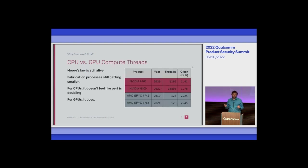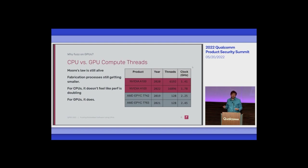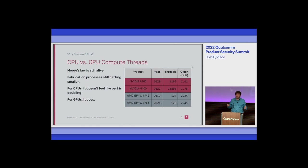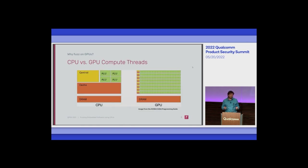Moore's Law is actually still very much alive. There are continuous semiconductor process improvements and we keep packing more transistors onto the same die. However, with CPUs it doesn't really feel like things are getting faster — just a little bit better each year. With GPUs things are actually getting noticeably faster all the time; it's like doing software development in the 90s where your CPU doubled in speed every month. To understand why, you have to look at the architectural differences between CPUs and GPUs.